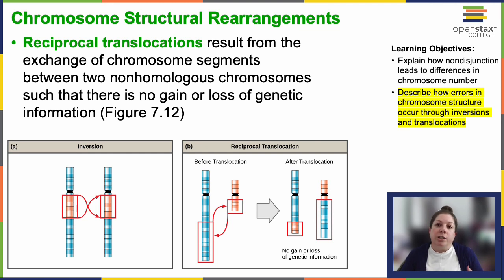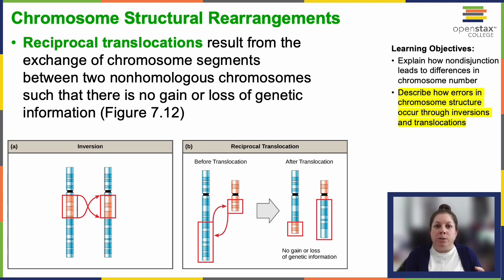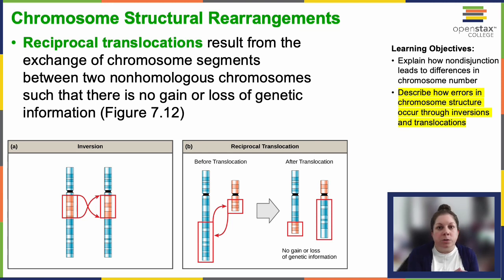Reciprocal translocations involve the exchange of chromosome segments between non-homologous chromosomes and preserve the genetic information. There are some really interesting examples where, looking at the evolution of species in general, you can actually follow where some of these events have occurred that, later down the line, led to changes in chromosome number and structure that led to new species.